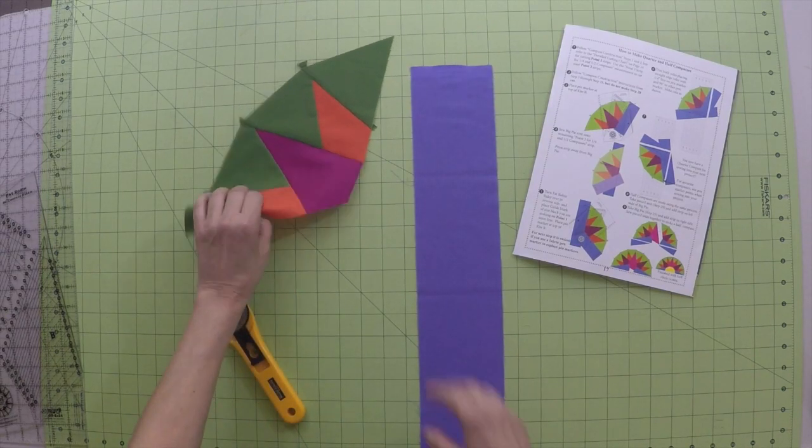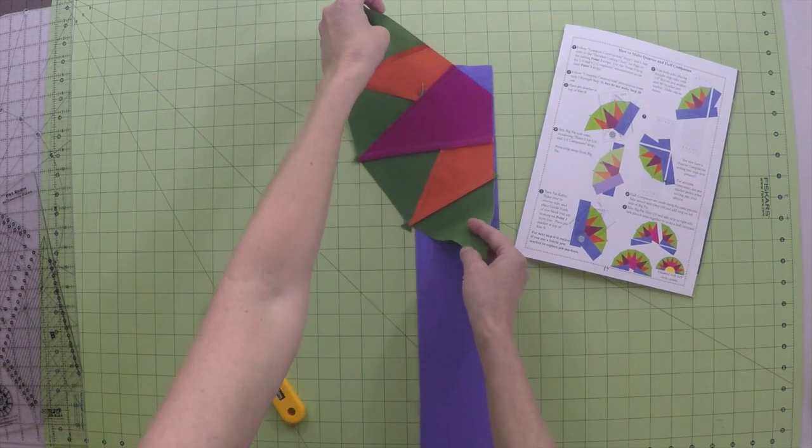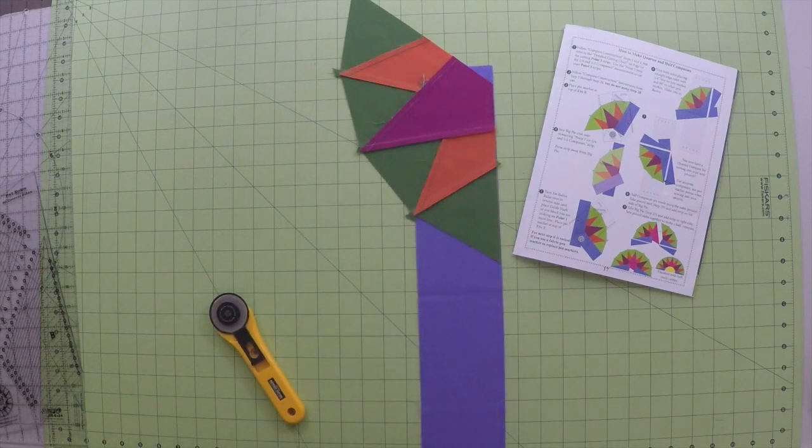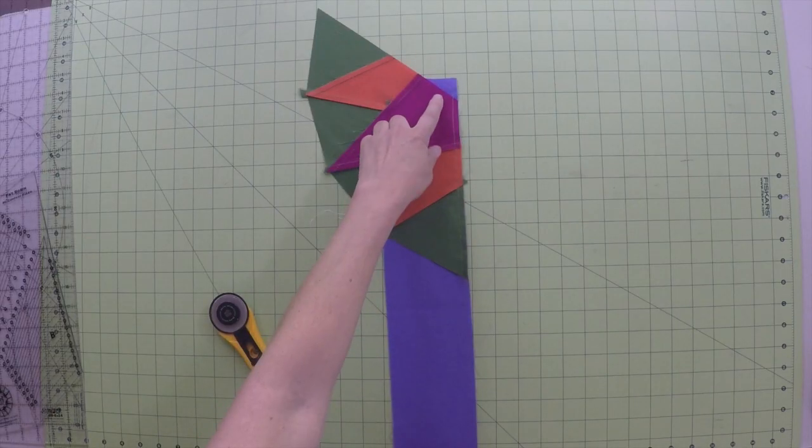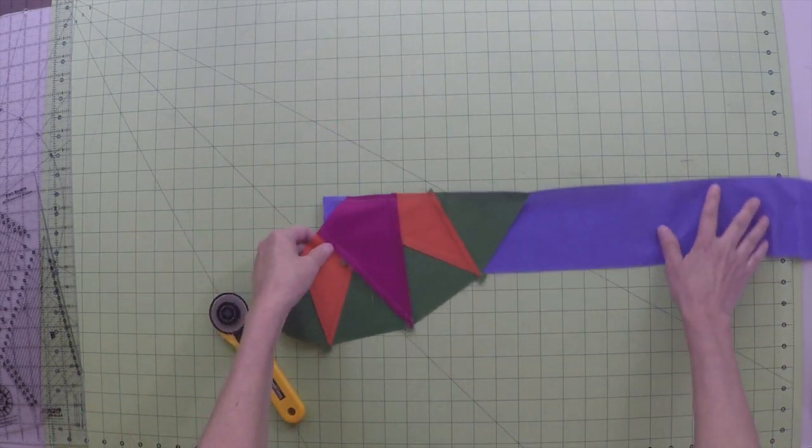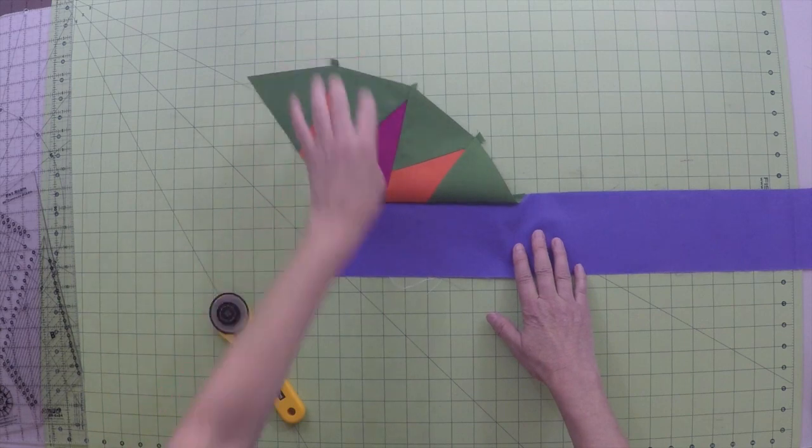First, you are going to sew big pie onto the point 3 strip as shown in step 24. Once sewn, you will press big pie away from the point 3 strip as shown in step 24.